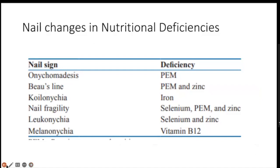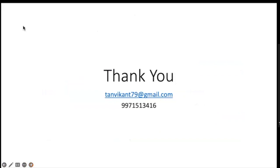Nail changes in nutritional deficiency include: onychomadesis and Beau's lines seen in protein-energy malnutrition or zinc deficiency; koilonychia in iron deficiency; nail fragility in selenium deficiency; again protein-energy malnutrition and zinc associated with melanonychia. If a child presents with any of these deficiencies, associated nail changes may be found. These are not used to make a clear-cut diagnosis, but they are associated features. Thank you — I hope this brief introduction to common nail disorders in children is helpful in clinical practice.